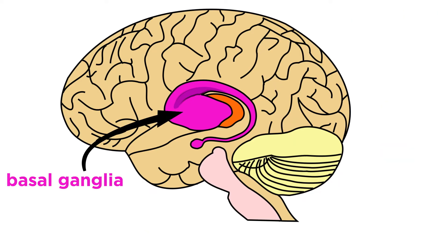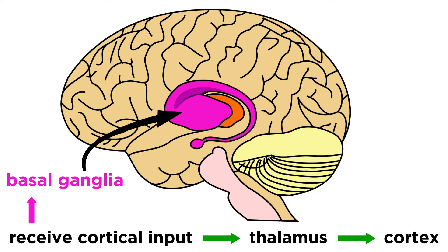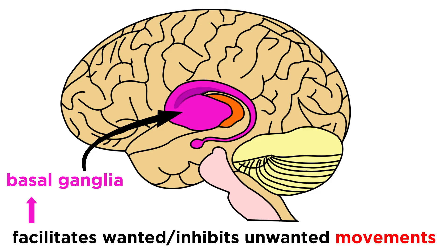The basal ganglia are not as dense, but they are quite complex. They are part of loops that receive cortical input and transmit it through the thalamus and back to the cortex. We believe this plays a role in motor output by facilitating wanted movements and inhibiting unwanted movements.